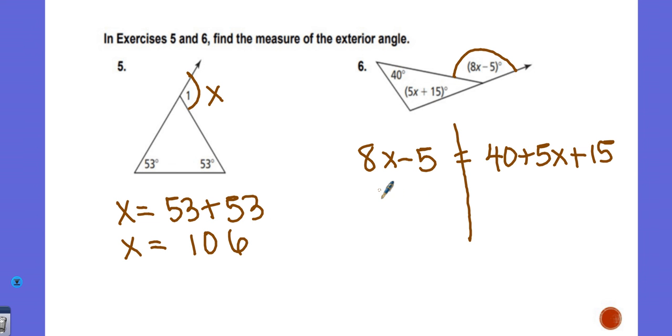So here I'm just going to do the math. 8X minus 5 equals this side. Since the 40 and 15 are on the correct side, I'm going to combine like terms.